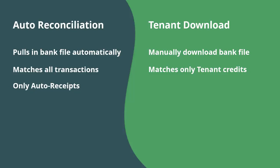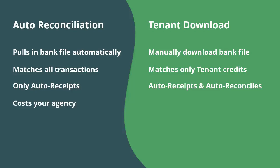The auto rec feature automatically receipts matched transactions when you reconcile. If the transaction is a credit such as a tenant's rent payment, you will have to click the reconcile button to create the receipt — and if you have a lot of transactions, that's a lot of clicking. Whereas tenant download automatically creates receipts and automatically reconciles the matched tenant credits, so it's a lot less clicking.